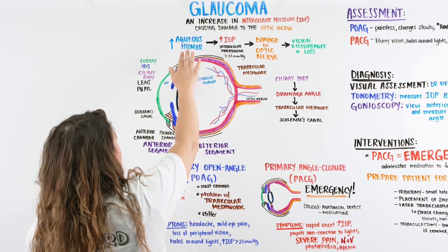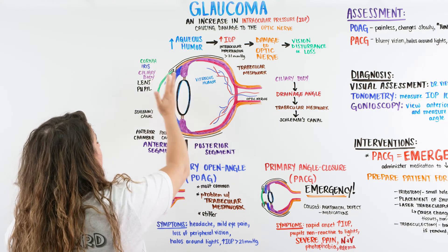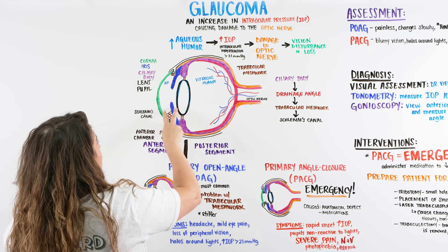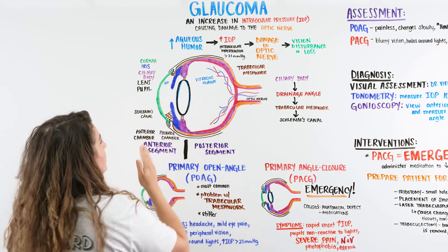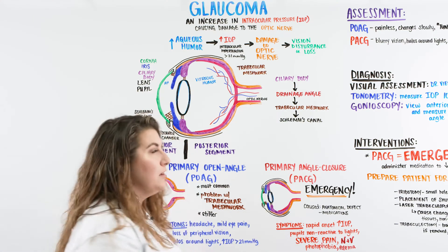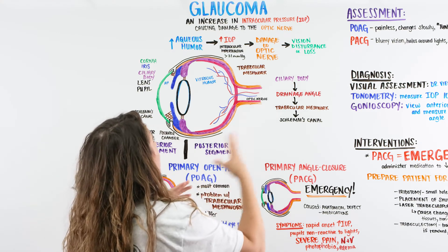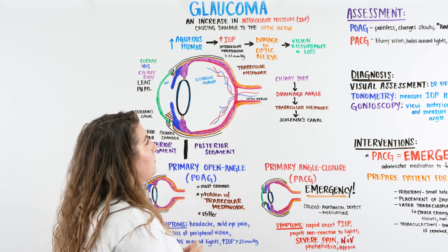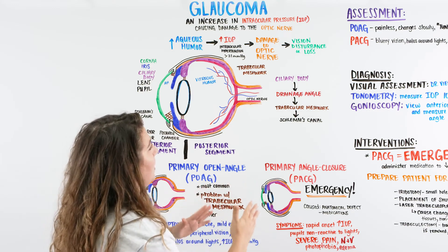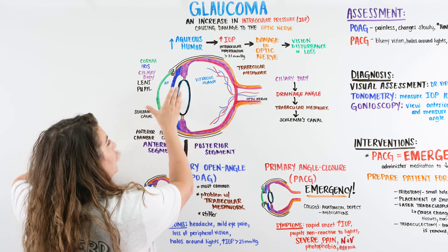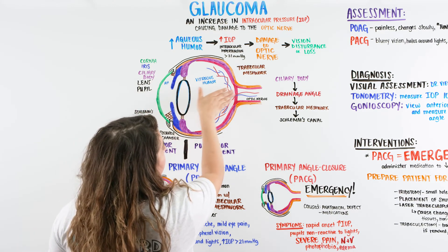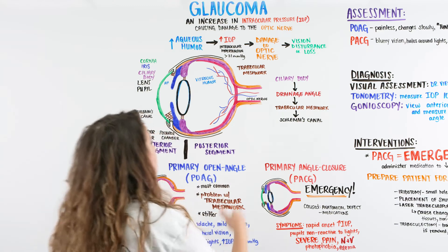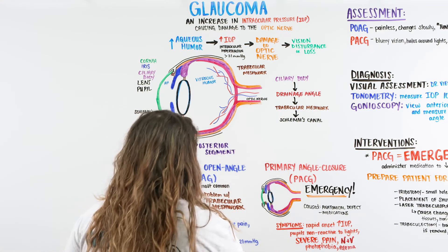We have aqueous humor, and when there is an increase in this aqueous humor in the front anterior segment of the eye, we get a volume increase. Much like the body with blood, when there's an increase in volume there is hypertension — we call this intraocular hypertension, which is an increase in the IOP. That pressure is typically greater than 21 millimeters of mercury, and it causes damage to the optic nerve, which can cause a vision disturbance and eventually blindness.